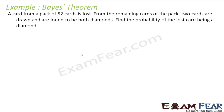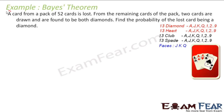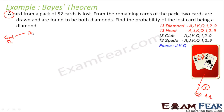Let's take the last question on Bayes' theorem — please pay attention. One card is drawn from a pack of 52 cards and lost. So you take out 1 card and it is gone, leaving you with 51 different cards. From the remaining cards, 2 cards are drawn and found to be diamonds. Find the probability that the lost card was a diamond.